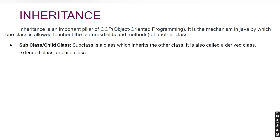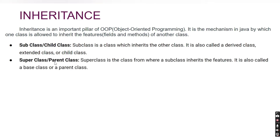Some terms you need to understand in inheritance: the first is child class. A child class is also known as a subclass — it is a class which inherits another class, meaning it extends the properties of another class. It is also called a derived class, extended class, or child class. The next term is parent class, also known as superclass — it is the class from where a subclass inherits its features.